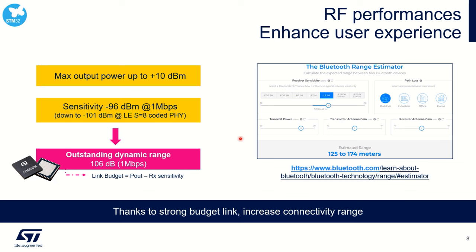What can you achieve with 106 dB? There is no magic answer — it really depends on the overall environment. I encourage you to go to the Bluetooth SIG website and use the Bluetooth range estimator tool, which gives an approximate range based on your application constraints — outdoor or indoor. For example, with up to 10 dBm outdoor at 1 Mbit/s, you can estimate the achievable range. RF performance is quite aggressive with a link budget of 106 dB.